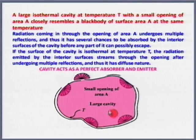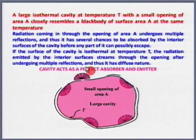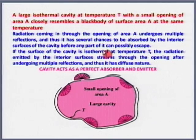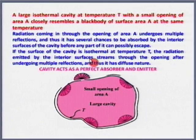How can the cavity become a perfect emitter? Whatever is getting multiply reflected can also get reflected and come out through the hole. Radiation coming in through the opening undergoes multiple reflections and thus has several chances to get absorbed by the interior surfaces before any part of it can possibly escape. If the surface of the cavity is isothermal, radiation emitted by the interior surfaces streams through the opening undergoing multiple reflections — making it diffuse in nature and a perfect emitter with no preference in direction.